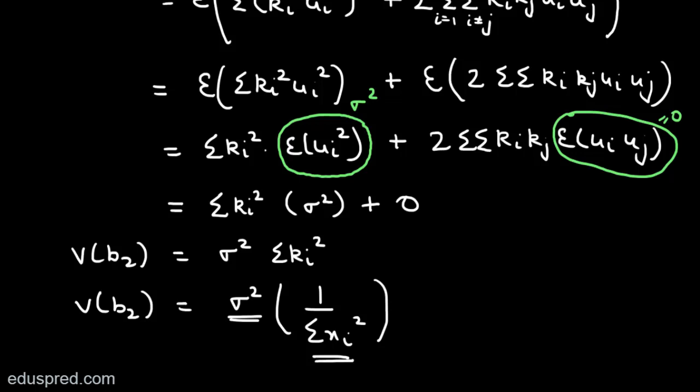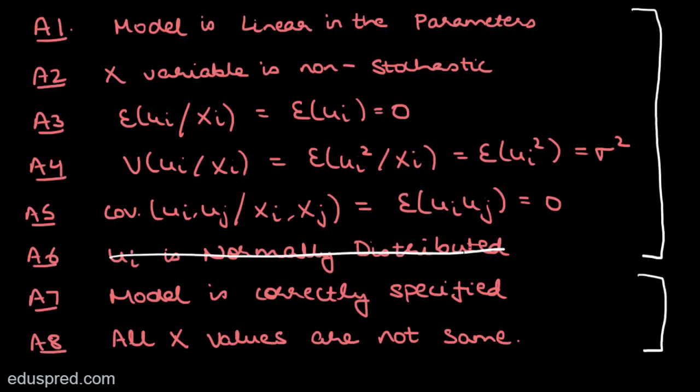Before ending this lecture, let's review which assumptions we used. In the first step, we substituted E[B2] = beta2 using unbiasedness, which indirectly utilized three properties needed for unbiasedness. We also directly used homoscedasticity and no autocorrelation. So to derive this variance formula, we have utilized all major assumptions — except assumption number six, which is not needed for the Gauss-Markov theorem.